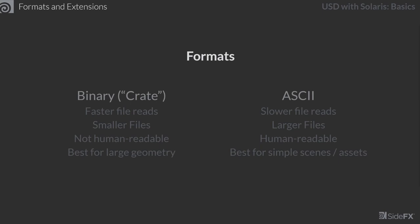The two formats available in USD are binary and ASCII. Binary — also called a crate file, giving us the .usdc extension — offers faster file reads and smaller files, though it's not human-readable. It's best for large geometry, large assets, simulations, or anything with tons of data. ASCII text files have slower reads and larger files, but you can actually read them and see what's happening inside. These are best for simple scenes or assets where you might want to inspect the contents.